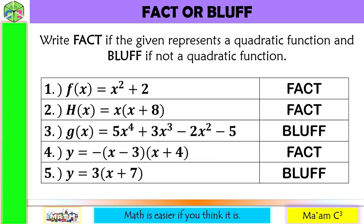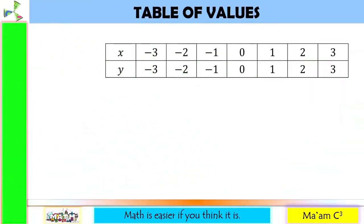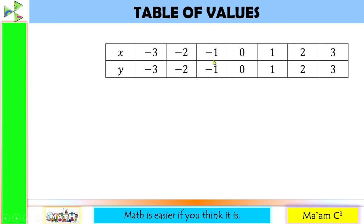How would you know if a table of values represents a quadratic function? First, you have to examine the increment of the x values — there should be a constant increment. From negative 3 to negative 2 is 1 unit, and the same applies all the way to 3, so the increment of our x values are all the same.